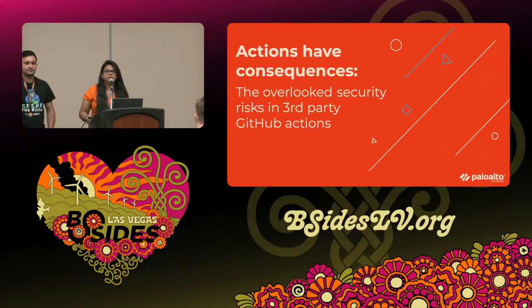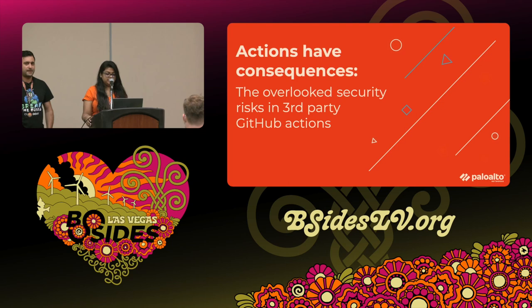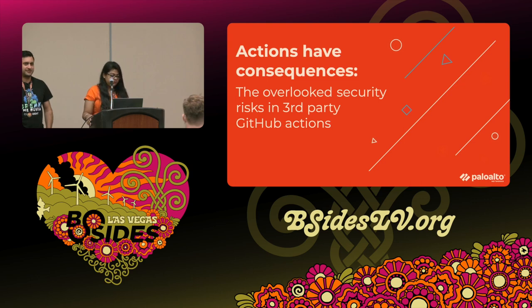Hello everyone, good afternoon and welcome to B-Sides Las Vegas. I am Harsha Nikkar and this talk is about 'Actions Have Consequences: The Overlooked Security Risks in Third-Party GitHub Actions,' given by our speaker Jaron Avital.